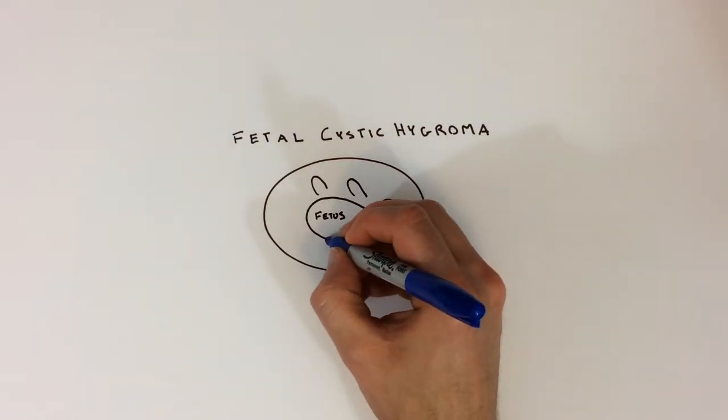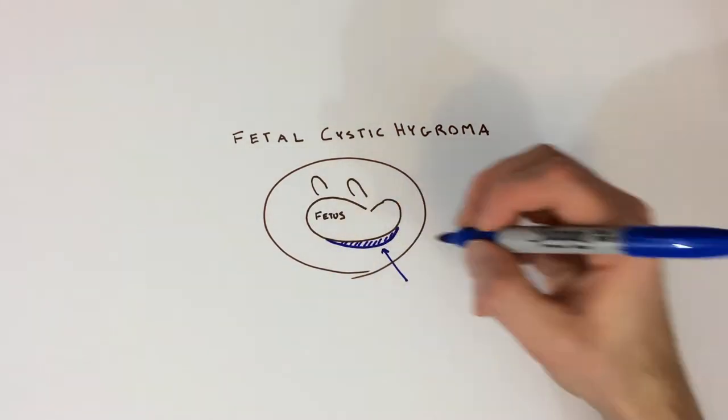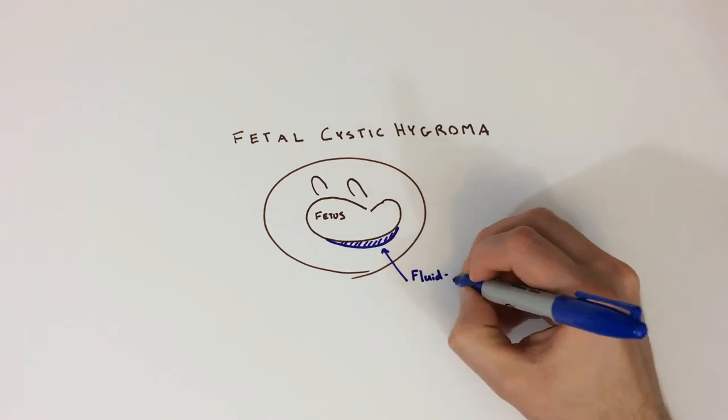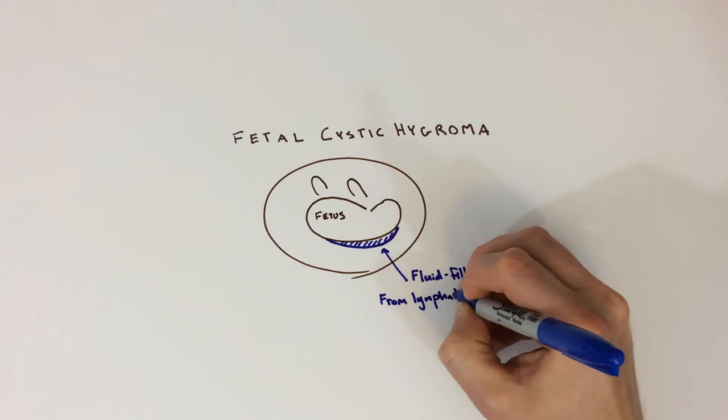A fetal cystic hygroma is a fluid-filled sac caused by lymphatic blockage that's identified in a fetus, generally via the first trimester prenatal ultrasound. They commonly involve the neck but can also extend over a larger part of the fetus.